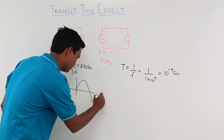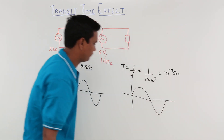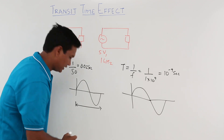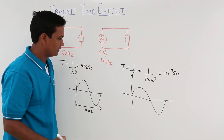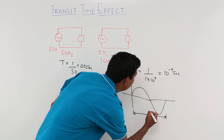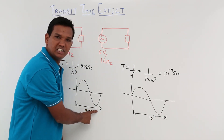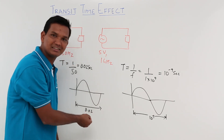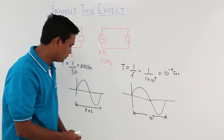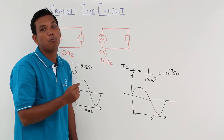Let me draw a sinusoidal voltage here. One cycle is completed in 0.02 seconds for the 50 Hz signal, whereas one cycle is completed in 10⁻⁹ seconds for the 1 GHz signal. We can say that the 50 Hz signal is changing very slowly — it takes 0.02 seconds per cycle — while the 1 GHz signal is changing very fast, completing one cycle in just 10⁻⁹ seconds.